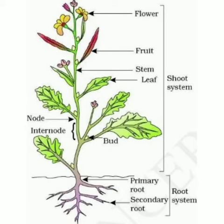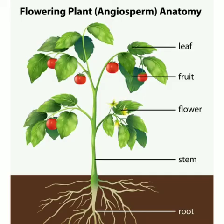We started up with the types of plants — herb, shrub, and trees — then we studied about creepers and climbers. Then we started studying the parts of the plant. To begin with, we started with the stem, then we continued with the leaf.